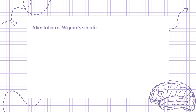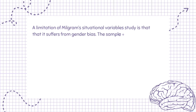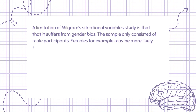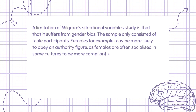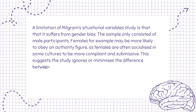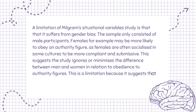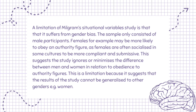A limitation of Milgram's situational variable study is that it suffers from gender bias. Milgram's sample only consisted of male participants. Females, for example, may be more likely to obey an authority figure, as females are often socialised in some cultures to be more compliant and submissive. This suggests the study ignores or minimises the difference between men and women in relation to obedience to authority figures, and the results cannot be generalised to other genders, e.g. women.